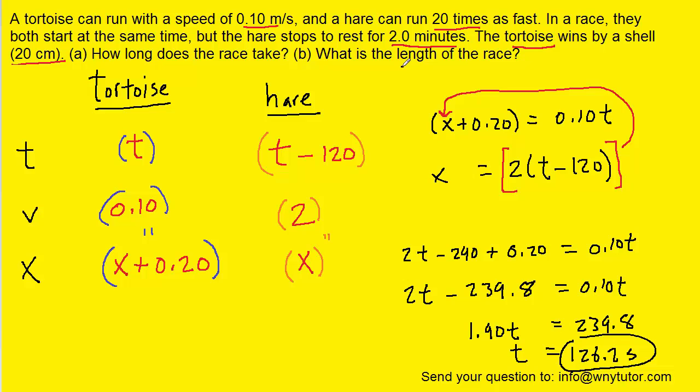Now for part B, they want the distance that the race takes, or the length that the race takes. Remember that only one of these two animals actually ran the full length of the race. And that was the tortoise, because he had completed the race. And so we're actually trying to solve for this distance right here, this x plus 0.20. Well, we recall that we had earlier set up an equation whereby we said x plus 0.20 was equal to the speed of the tortoise multiplied by the time. But we just figured out the time to be 126.2 seconds.